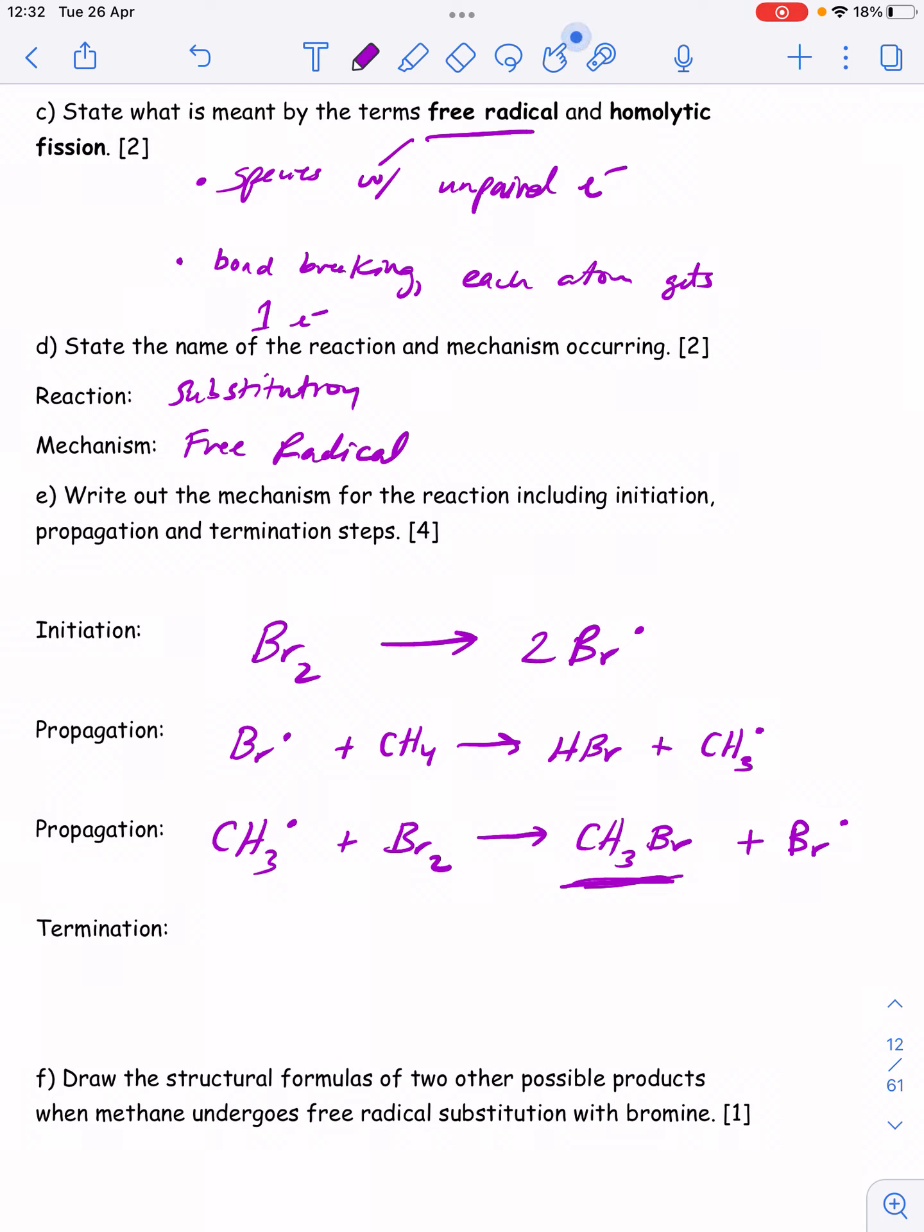A termination step is one where you begin with two radicals—they don't have to be different. Because I have two unpaired electrons, if they come together, I'll end this mechanism because there'll be no more radicals. So the termination step always begins with two radicals and ends with no more radicals. An alternative termination step would be if two different methyl radicals came together, then you'd form ethane, C2H6.